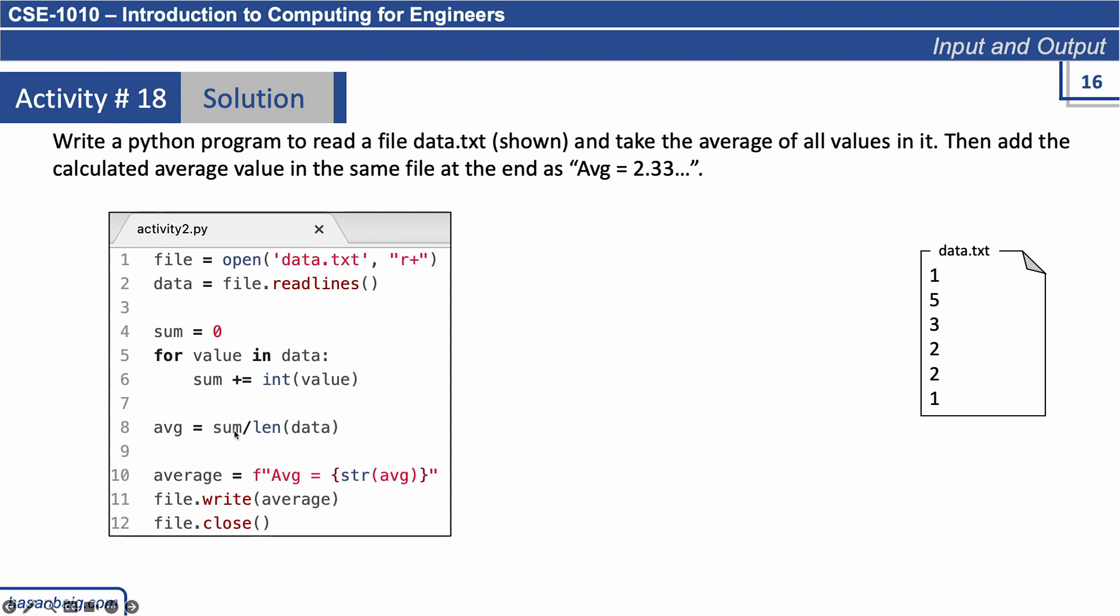Now we have to calculate the average. So sum divided by length of data will give us an average. Now this average is a floating-point value. Whatever we need to write into the file has to be converted into a string.